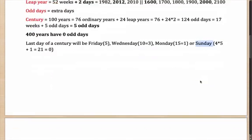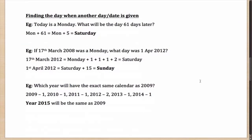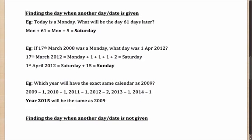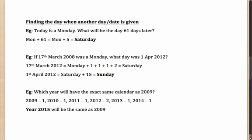Now using these concepts, let's look at a few questions. First: finding the day when another day or date is given. If today is Monday, what will be the day 61 days later? That is Monday plus 61. Dividing 61 by 7, you get 56 as divisible and are left with 5 odd days. Monday plus 5 odd days gives Saturday, which is the answer.